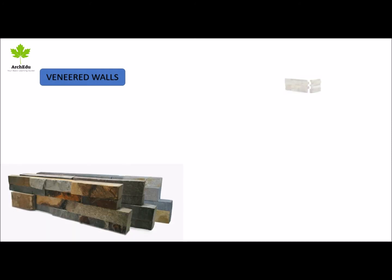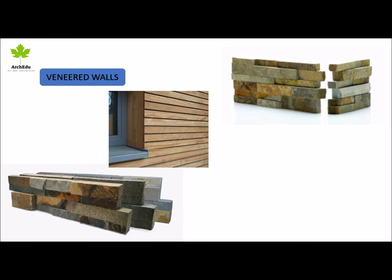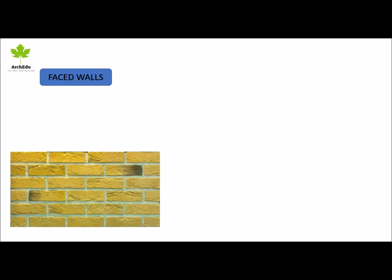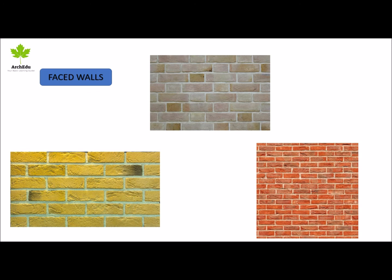Veneered wall: it can be made of brick or stone. The most famous veneered wall is made of brick and the wall is only one leaf thick. Faced wall: it is a wall where masonry facing and backing are bonded so as to exert common action under load. It creates a streamlined look and is easy to install.